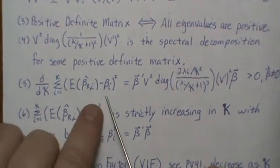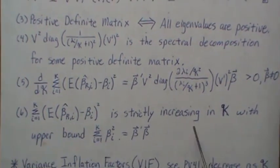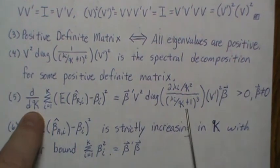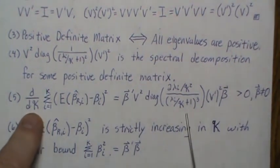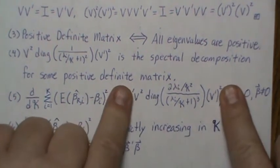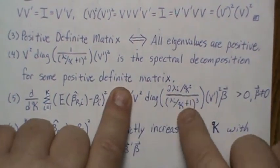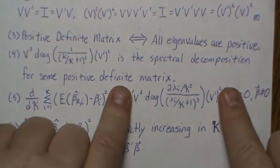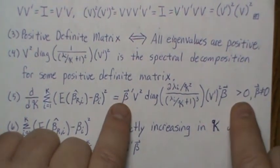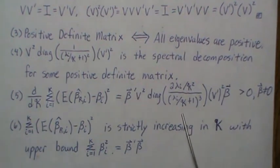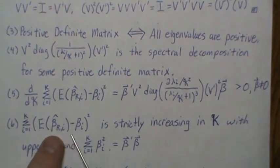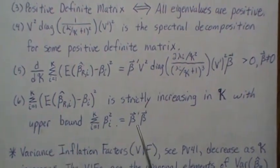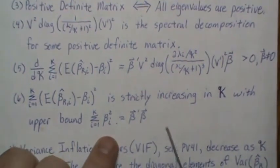Now let's take the derivative of this expression with respect to K, the shrinkage parameter — everything else is constant but the diagonal matrix. It's easy to show the derivative equals this expression. Because this is another positive definite matrix with positive diagonal elements and orthonormal eigenvectors, beta can be anything and so this derivative is always positive (when beta is not zero). That tells us the squared bias is strictly increasing in K, with an upper bound of beta transpose beta.